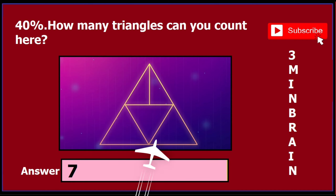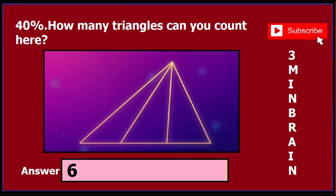Now, in version 2 of this question, if you find this sort of triangle, then the answer is 6. You can see here the triangle — if you find this sort of triangle, then the answer is 6.